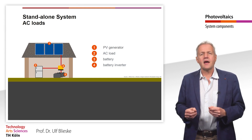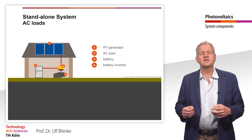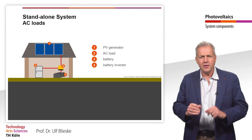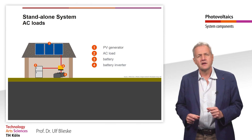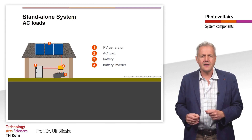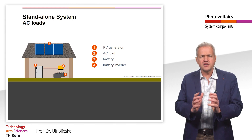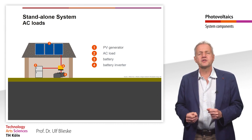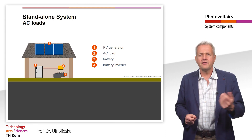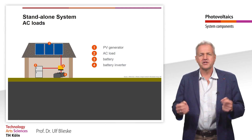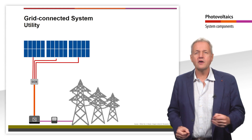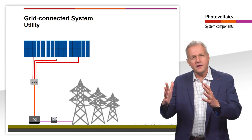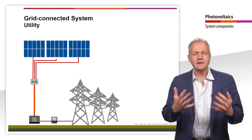The system setup shown here is typical for systems on buildings whose power supply is completely independent of the public grid. In this case, the battery storage must of course be large enough to ensure power consumption at night or for several days with low irradiation. Worldwide, however, only a small proportion of PV modules are installed in standalone systems.